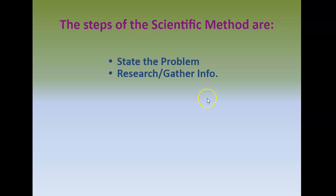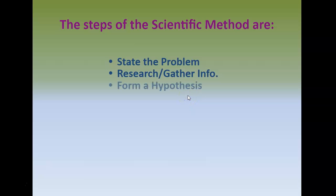Your next step is going to be to research and gather information. This is a step that a lot of times gets forgotten when people list out the steps of the scientific method, and it's a really important step. In order to come up with a good solution, you need to really understand the problem. You also don't want to come up with a solution that's already been figured out. So figure out all the possible scenarios and then come up with what is called the next step: forming a hypothesis.